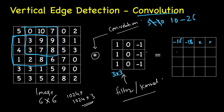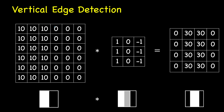Let's see why this filter detects vertical edges with a simpler example. Consider an image where the left part is completely bright and the right part is dark. In a grayscale image, values range from 0 to 255 for 8-bit images. Using a simplified scale where 10 is bright and 0 is dark, when you apply the filter you get higher values in the middle region, indicating an edge.